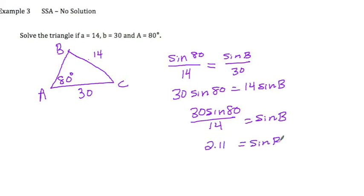Now whenever you're trying to find the angle, when you hit second sine and type in 2.11, you're going to get an error message because your calculator can't do it. If you've ever noticed anything about sine and cosine, the values for sine and cosine, if you take the absolute value, it's got to be less than 1.